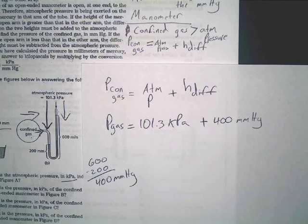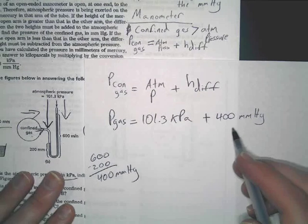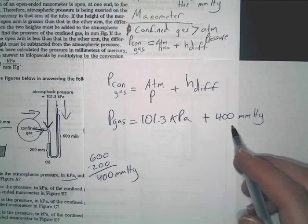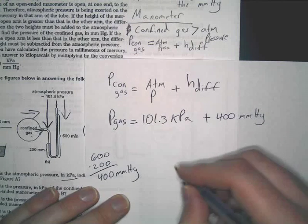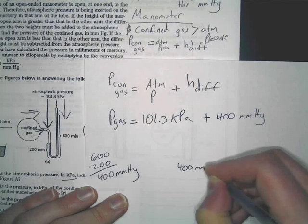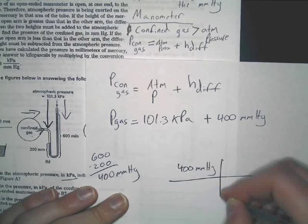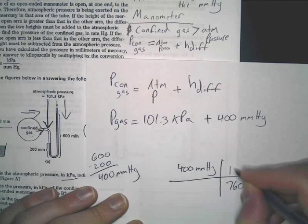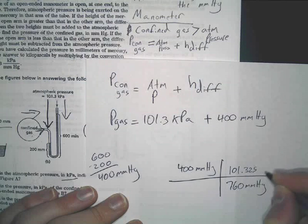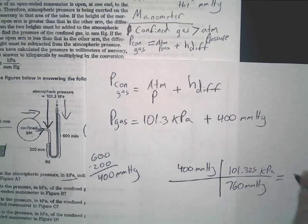So we're using this one so we know that the pressure of the confined gas is equal to atmospheric pressure plus the height difference. So pressure gas is equal to... What is atmospheric pressure here? Now what is the difference in height here? 600 minus 200. Obviously that's 400 millimeters of mercury. However, do you notice an issue? What's the issue?